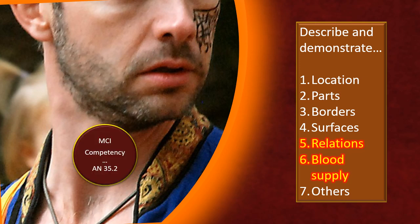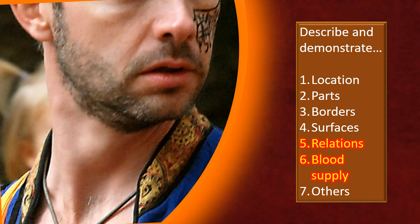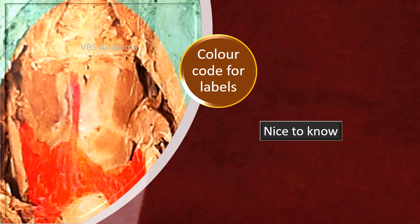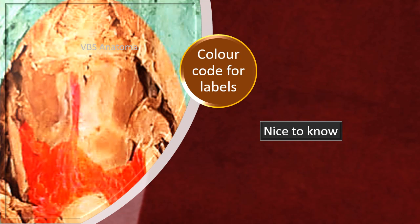This video is accompanied at the end by a set of image-based MCQs and an answer key. Reminding you of the color code: labels scripted in black with a light gray background are must-know items. Nice-to-know labels are scripted in white with a black background.